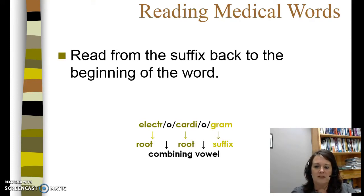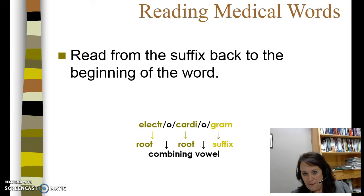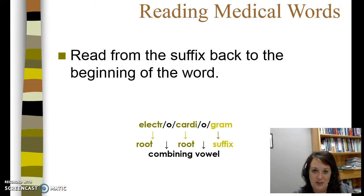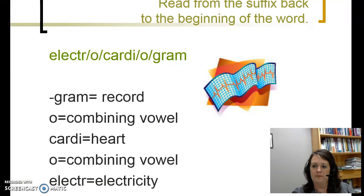Read from the suffix back to the beginning of the word. In medical terminology, when you're doing your exams and homework, you're going to work backwards — we start with the suffix when making a definition. If I tell you to give me the definition of electrocardiogram, you start with gram and tell me it's a record. Jump forward to electro — of the electrical activity. Cardio is the heart. So the definition of electrocardiogram is: a record of the electrical activity of the heart. A gram is a record, cardi is the heart, and electro means electricity or electrical activity.